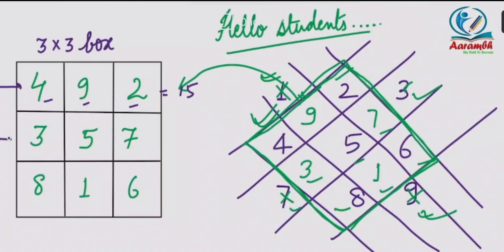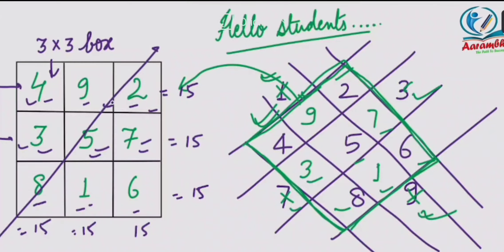3 plus 5 plus 7 equals 15. 8 plus 1 plus 6 equals 15. Vertically: 2 plus 7 plus 6 equals 15. Diagonally: 8, 5, 2 equals 15. In the same manner, diagonally 4, 5, 6 equals 15. So in each case we have got the result 15.